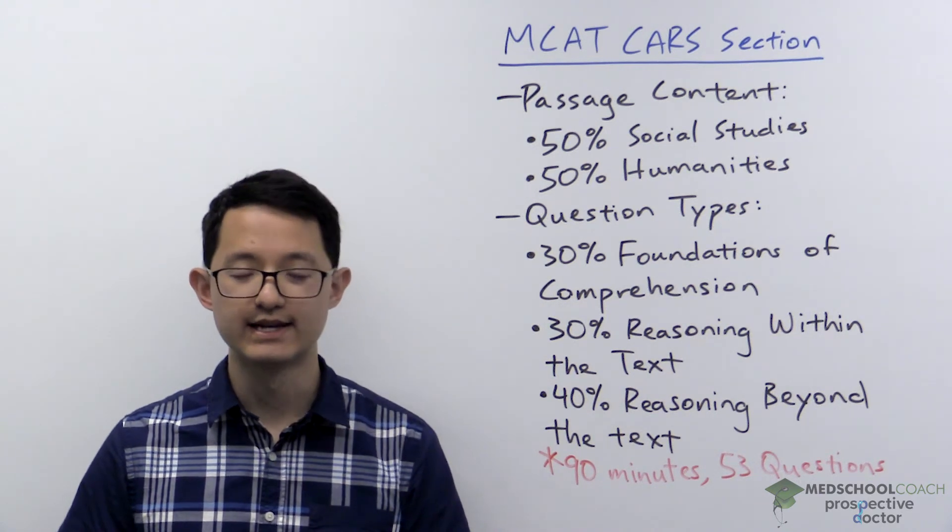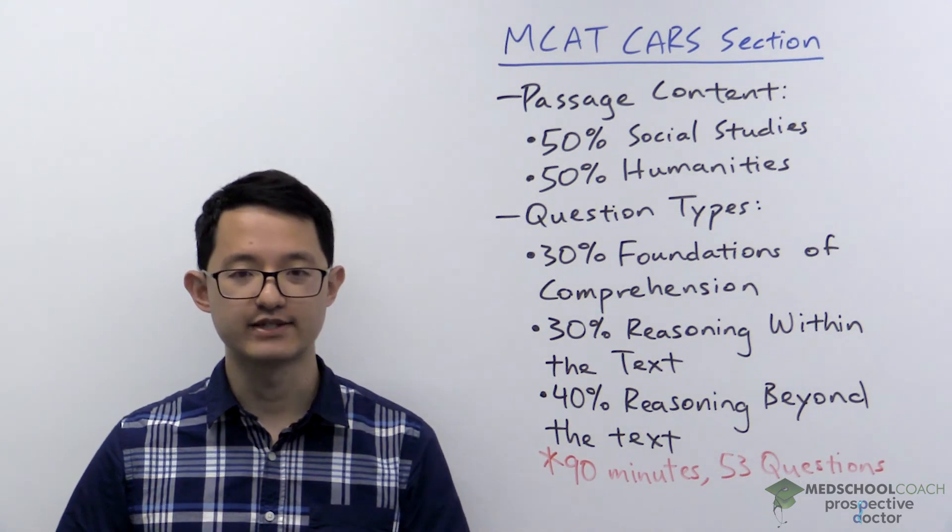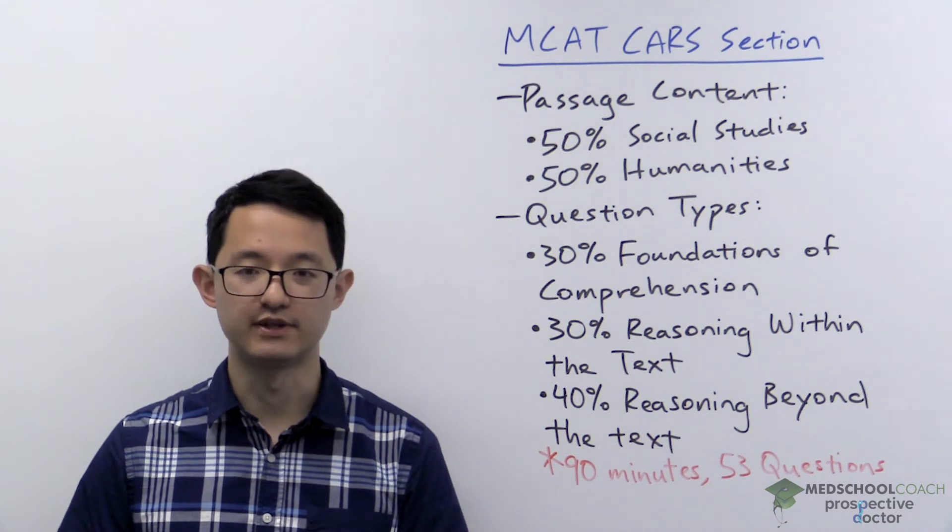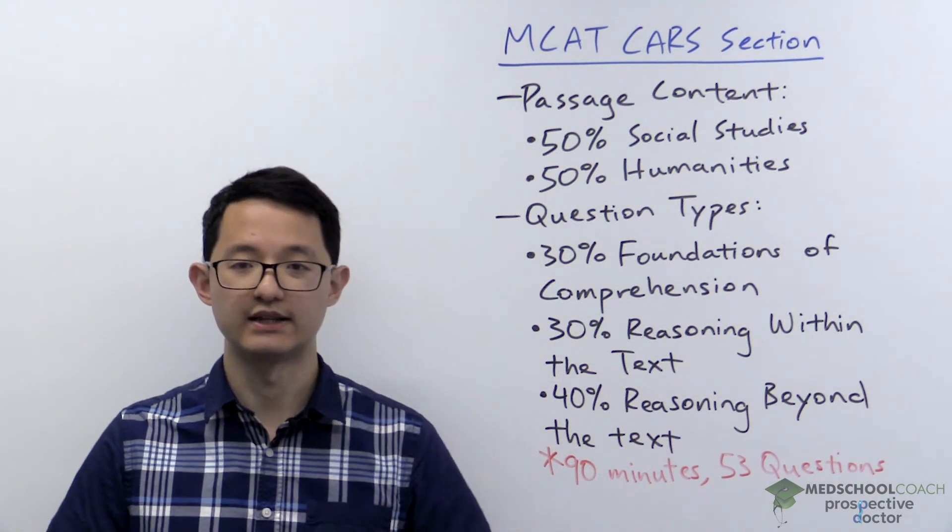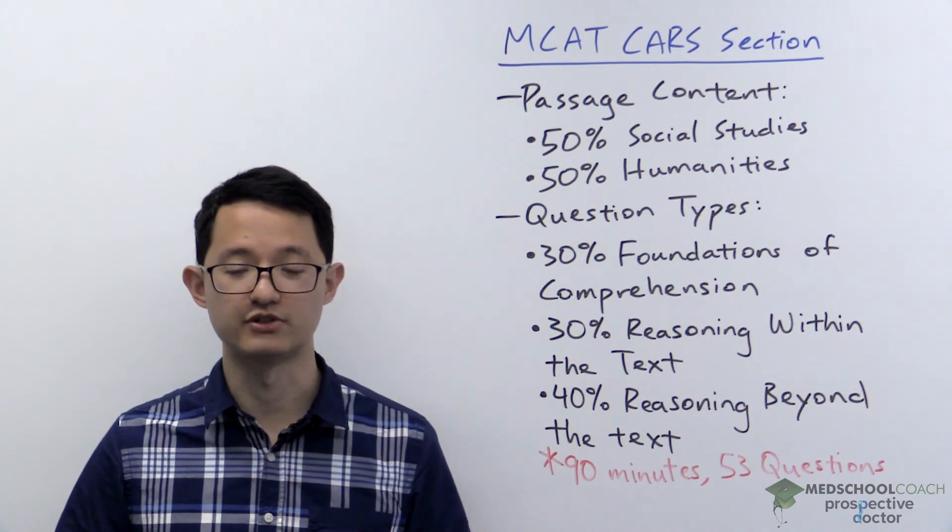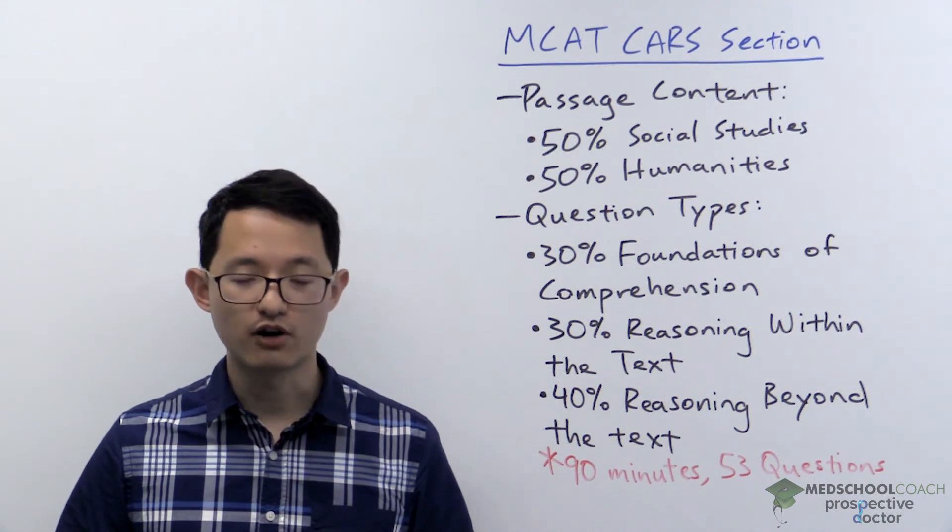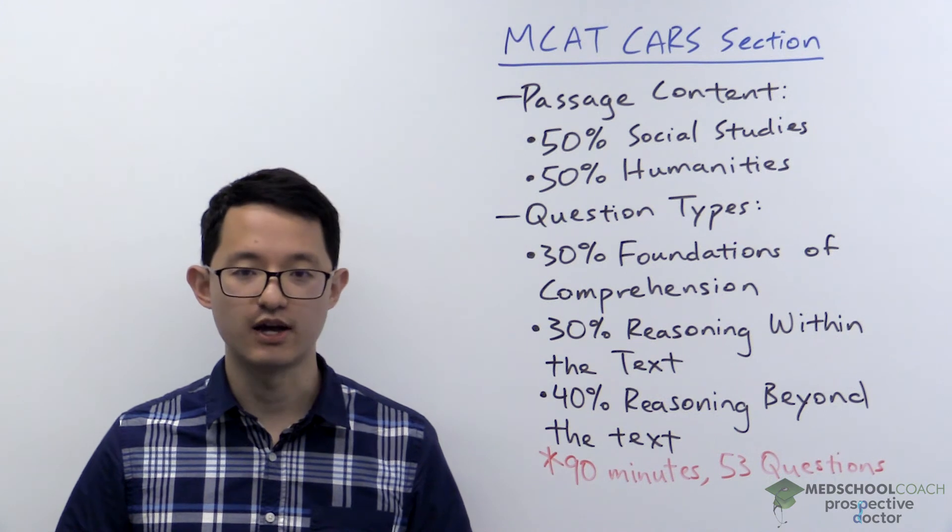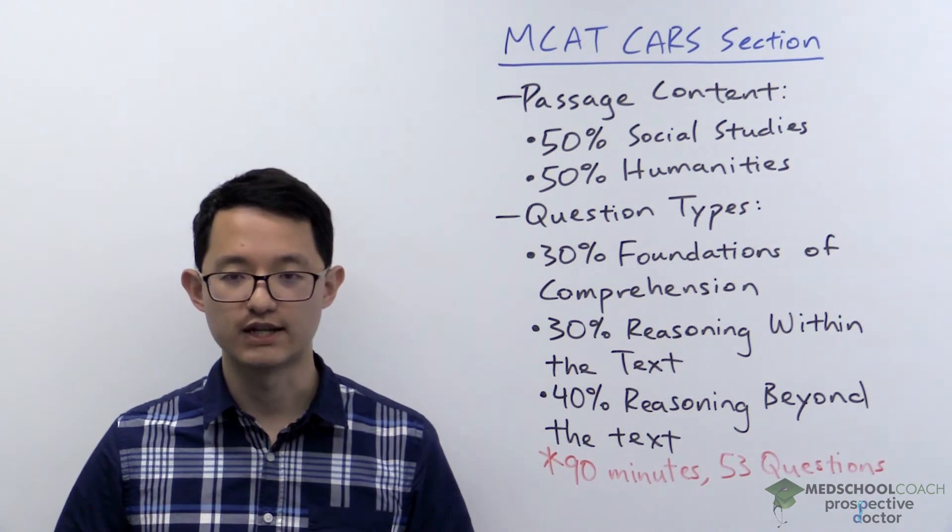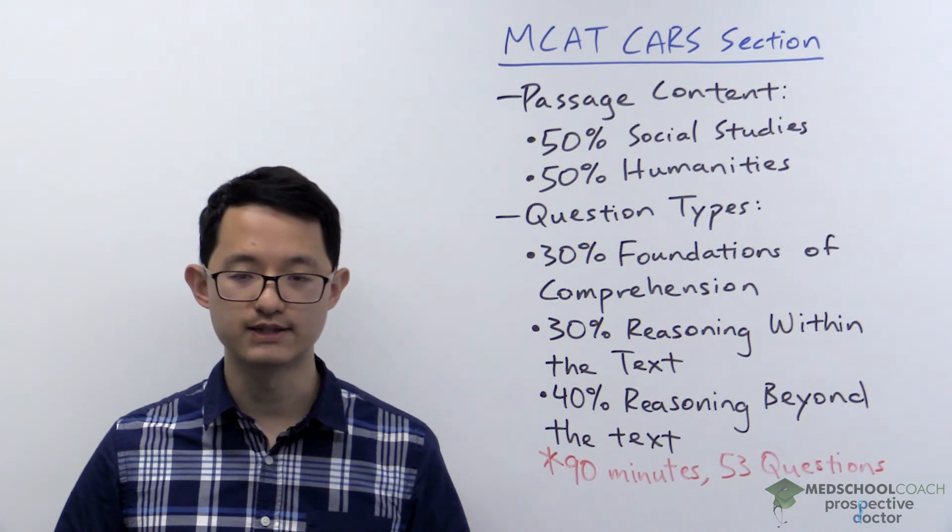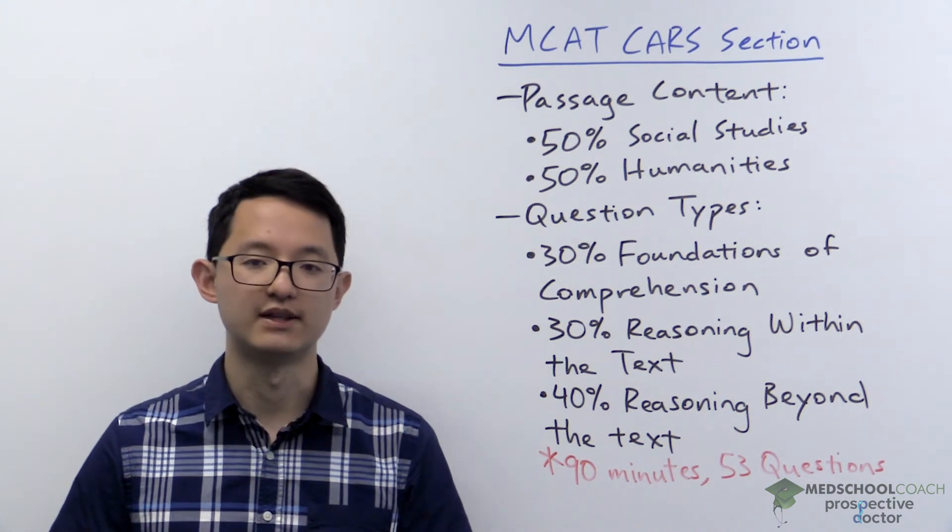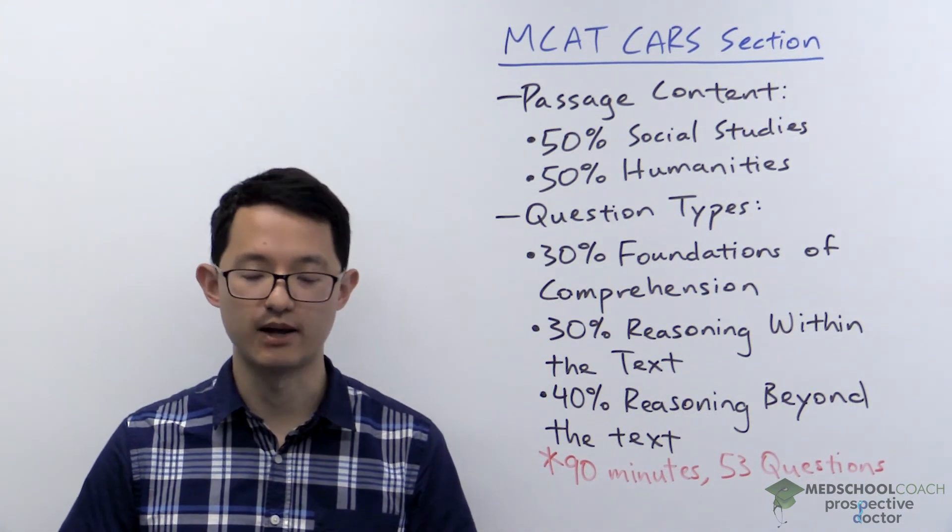What I mean by this is if you can't get the accuracy that you need under untimed conditions, you certainly can't expect your accuracy to suddenly go up when you start doing passages timed. So start by doing practice passages untimed. Troubleshoot your strategies for the questions and answer choices until you can get the accuracy that you want. Then you can throw in the pacing component and do timed passages.